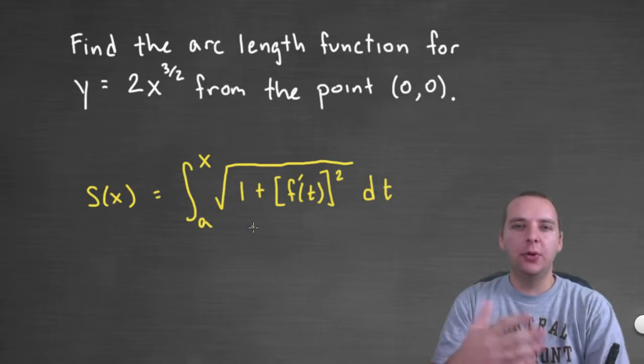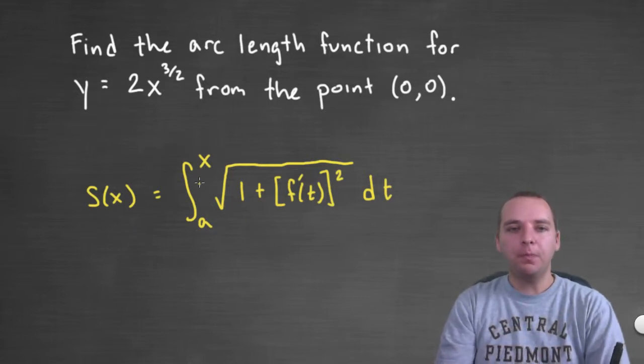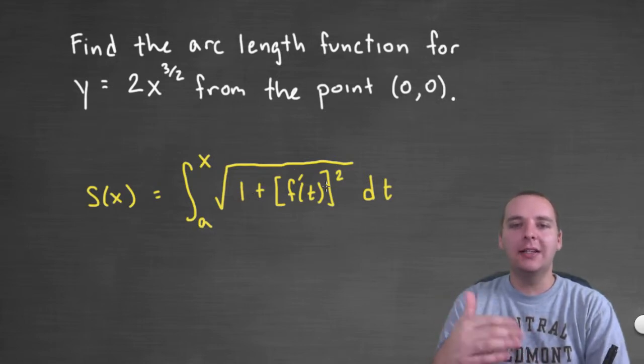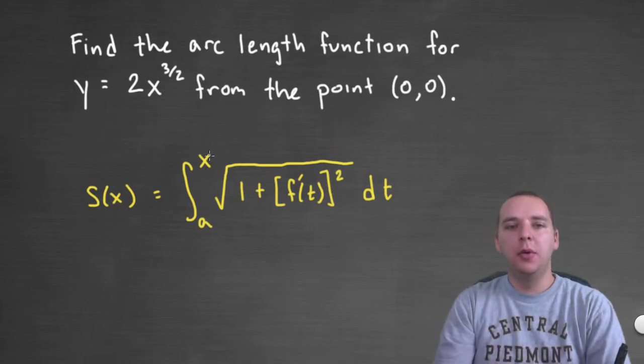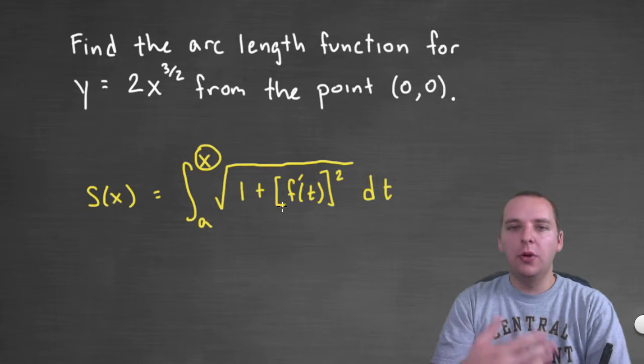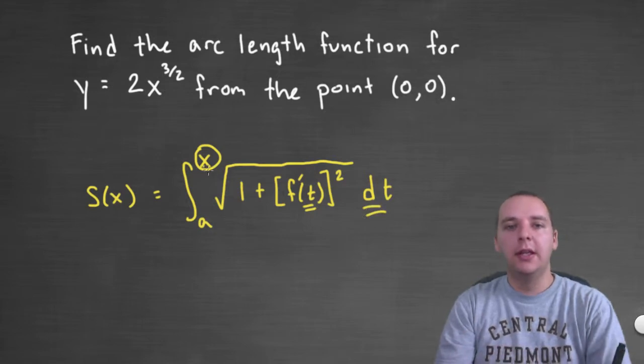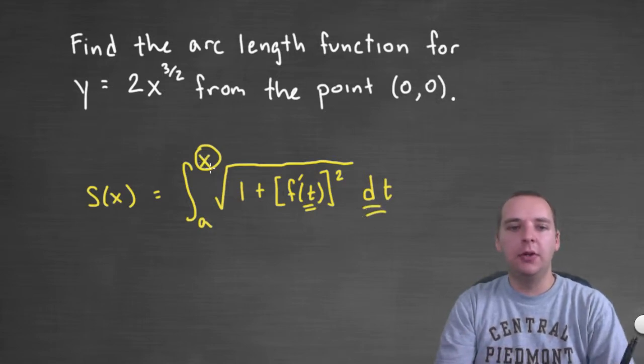Now one slight change you'll remember from your plain arc length formula was it usually goes from a to b and you add the square root of 1 plus f prime of x squared dx. But when you make this upper limit of integration a variable, you'll recall that you can't have the same variable in your integral as the variable of integration that you have in your limit of integration. So we'll remember those details as we work this problem out.